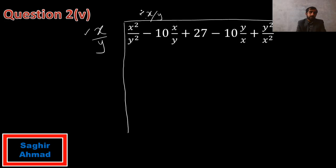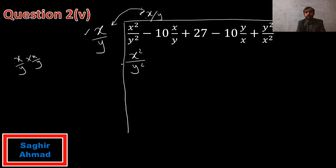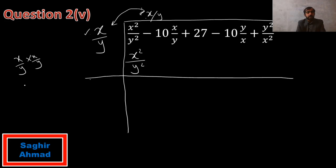In the division method, I write x over y as the starting number. When we multiply x over y by x over y we get x squared over y squared, which matches the first term. In the second step we add both numbers: x over y plus x over y equals 2x over y, so I write 2x over y as the divisor for the next step.